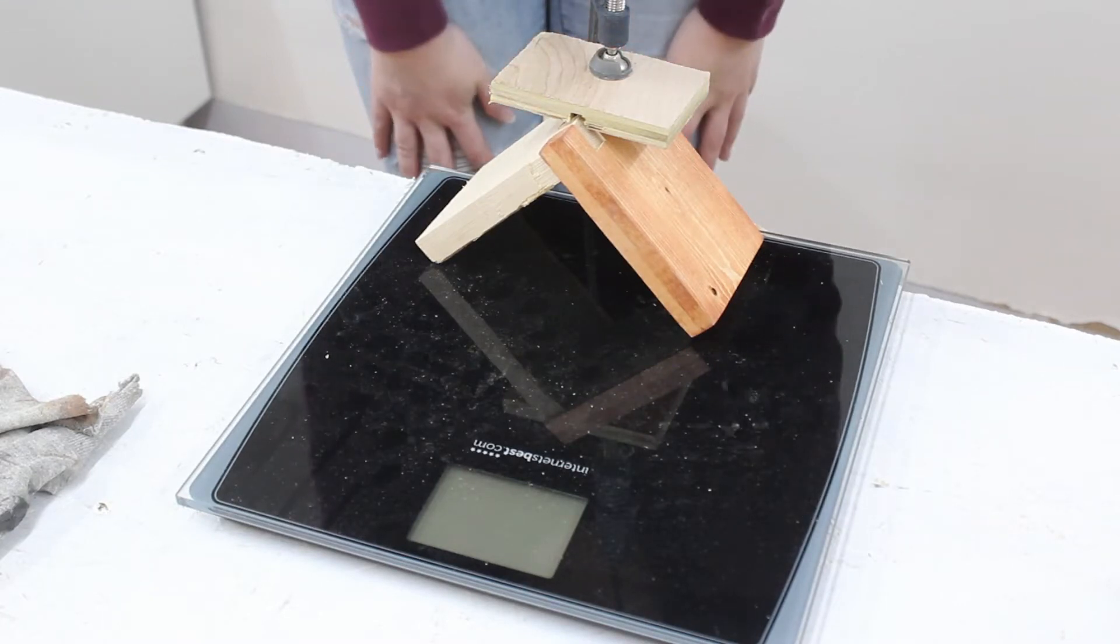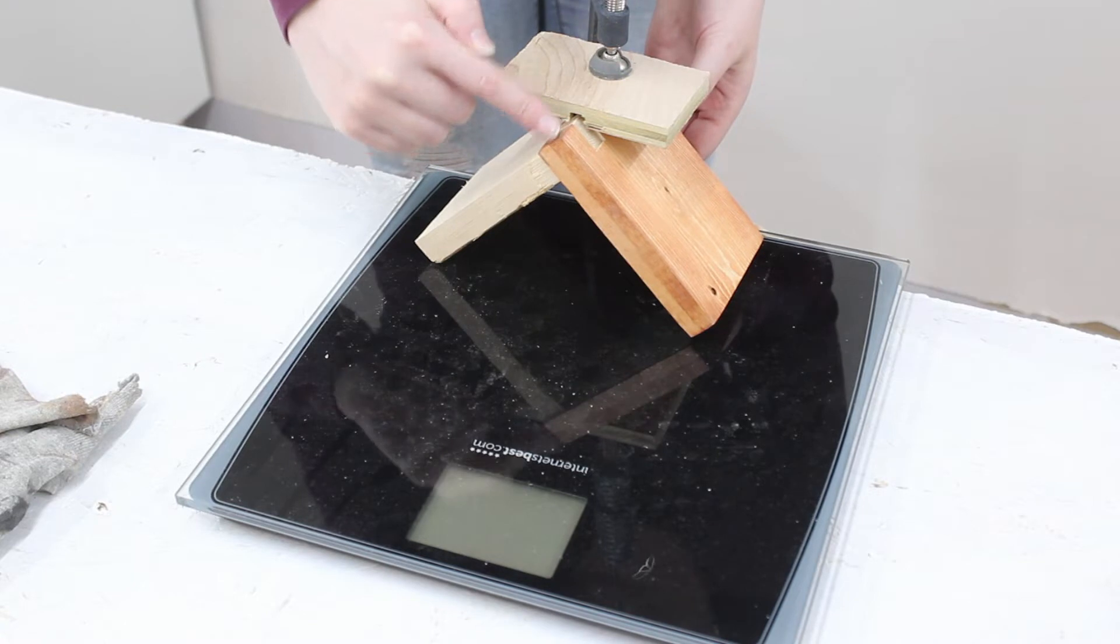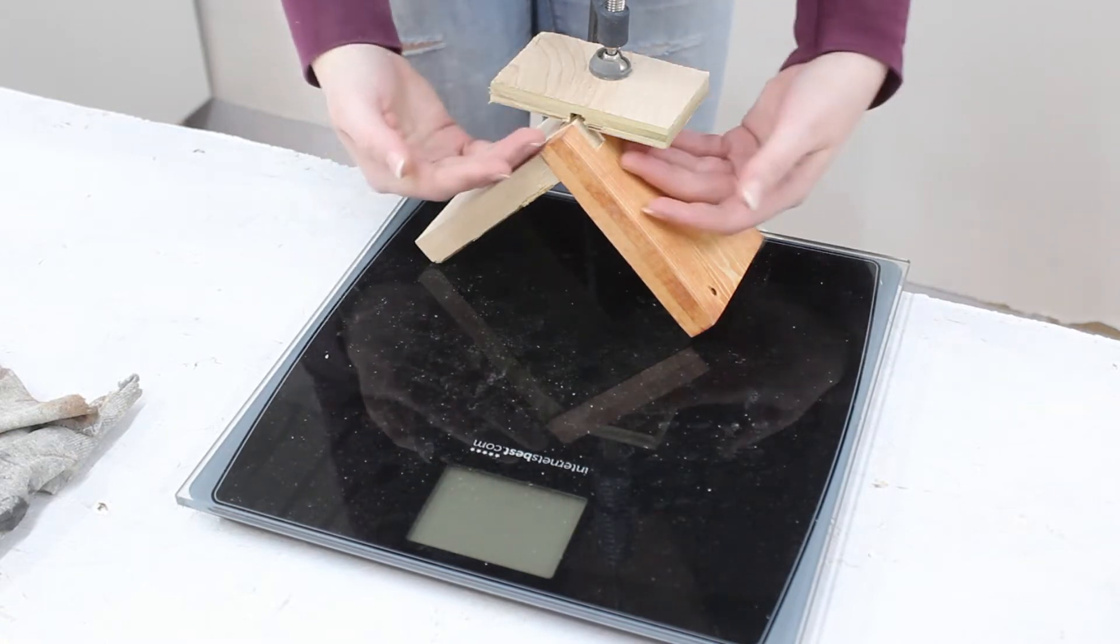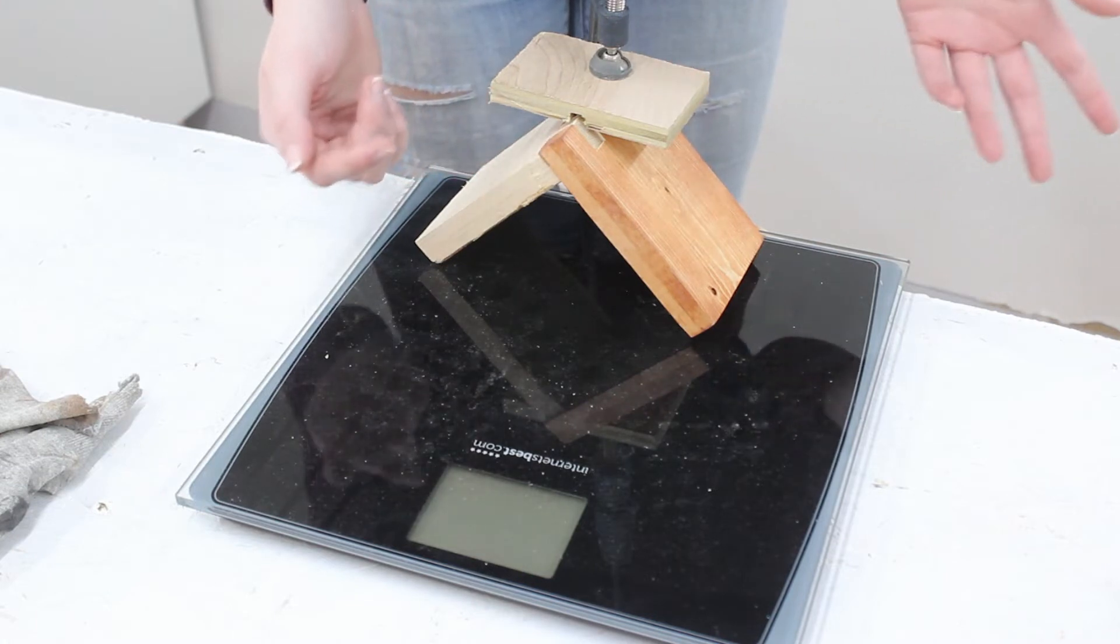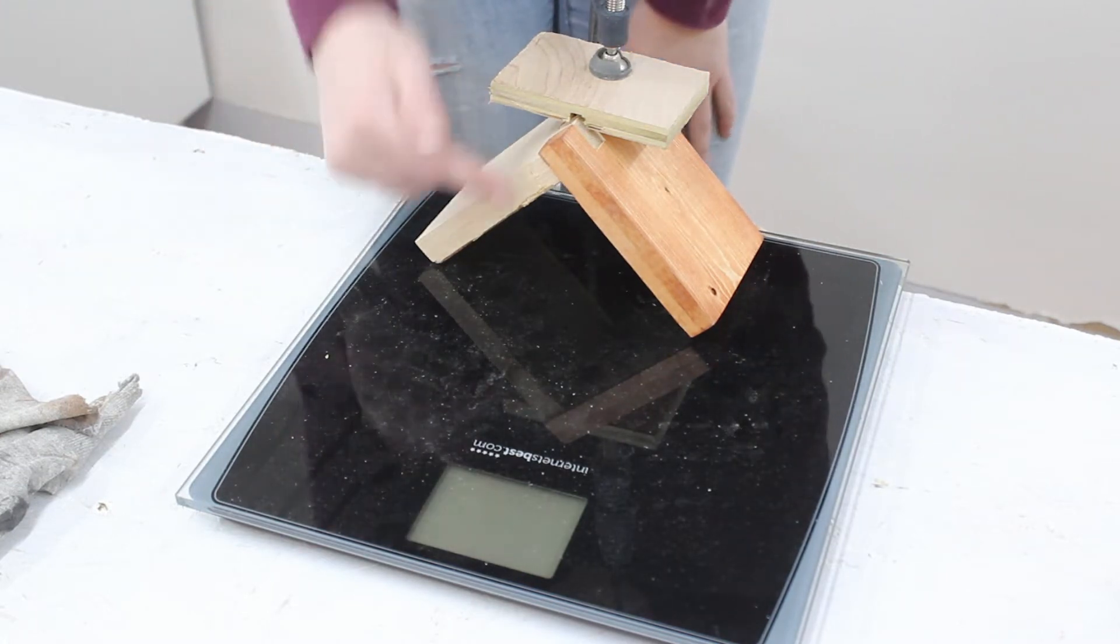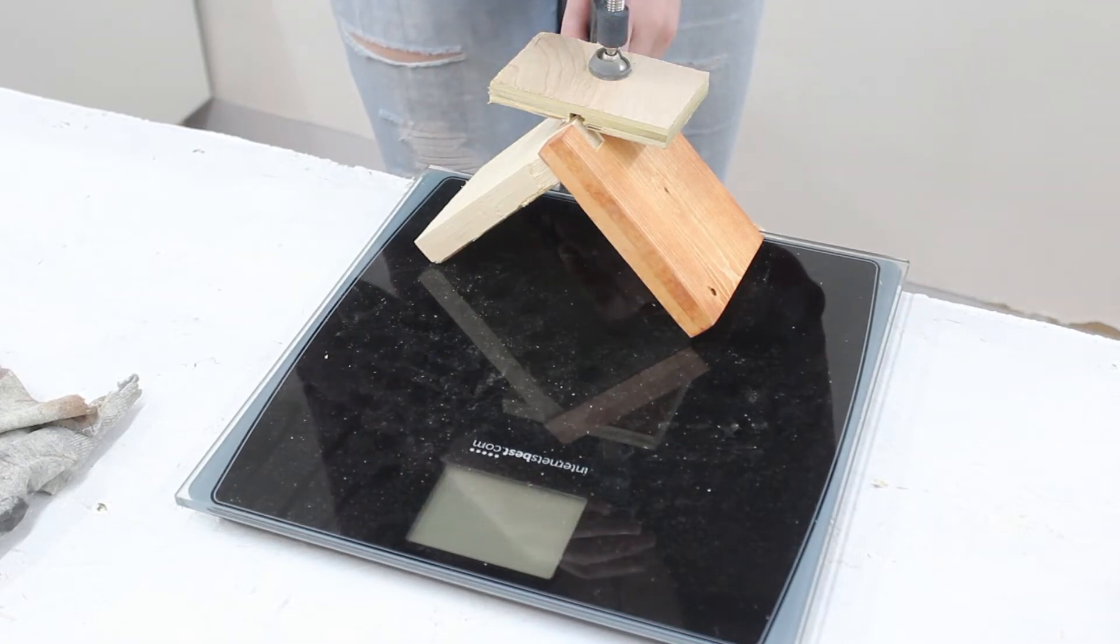All right. So now I've got the last glue joint. This is the box joint where you have all these interlocking sections of the wood, which gives more glue or more surface area for the glue to stick on. So this is the one I'm expecting to be the strongest, but let's go ahead, see how it works.